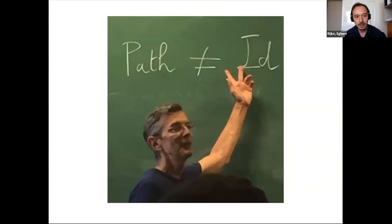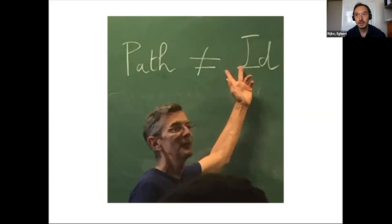At CMU, we decided at some point that we should really call elements of the identity type 'identifications,' because there may be other objects we want to consider as the interval object. The most notable one is the interval from zero to one in the real numbers — if you use that as your interval object, your paths will be topological paths.